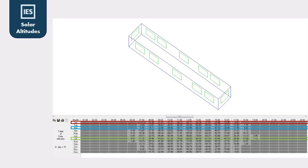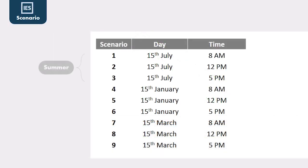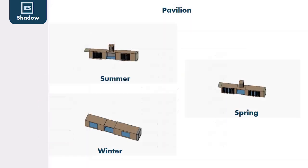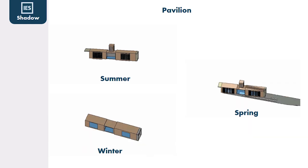For solar shading calculation through the year, we picked three months with three timings each to check the effectiveness of the pavilion in different seasons. We chose January for winter, March for spring, and July for summer. We also studied the shading to make sure all scenarios benefit from the average solar shade.